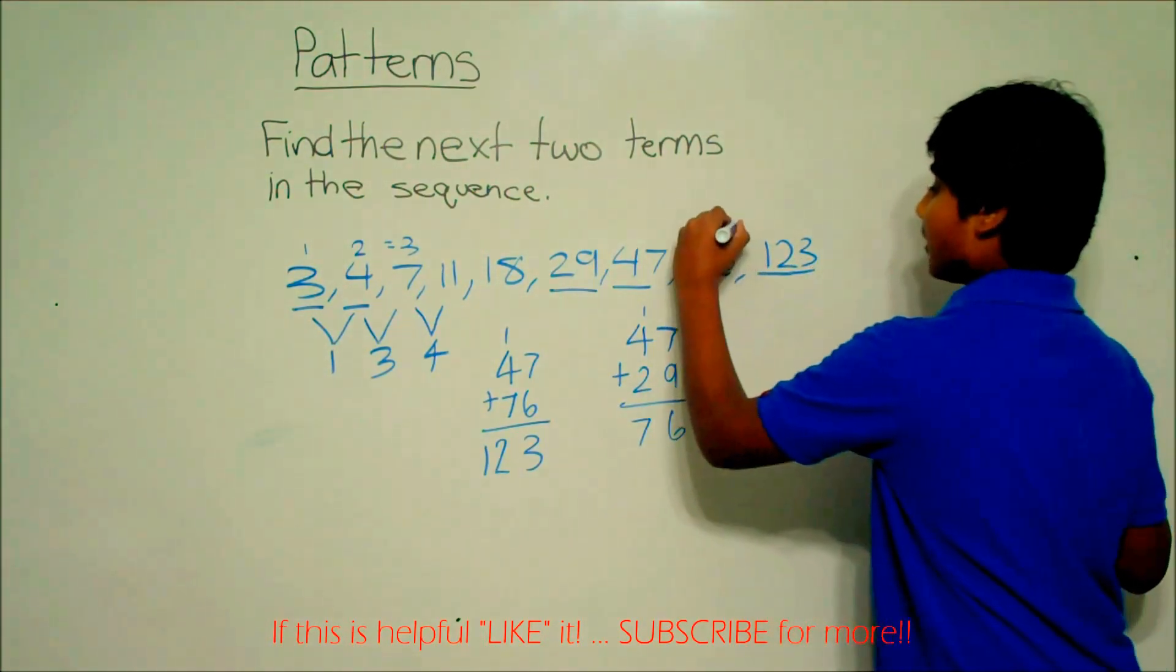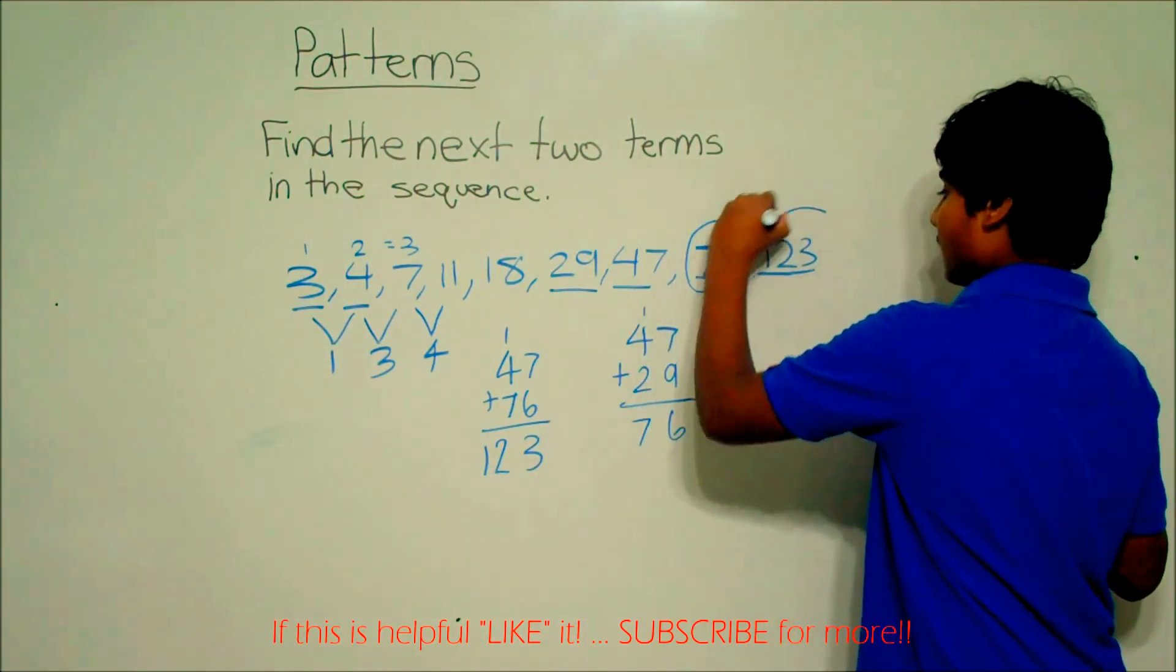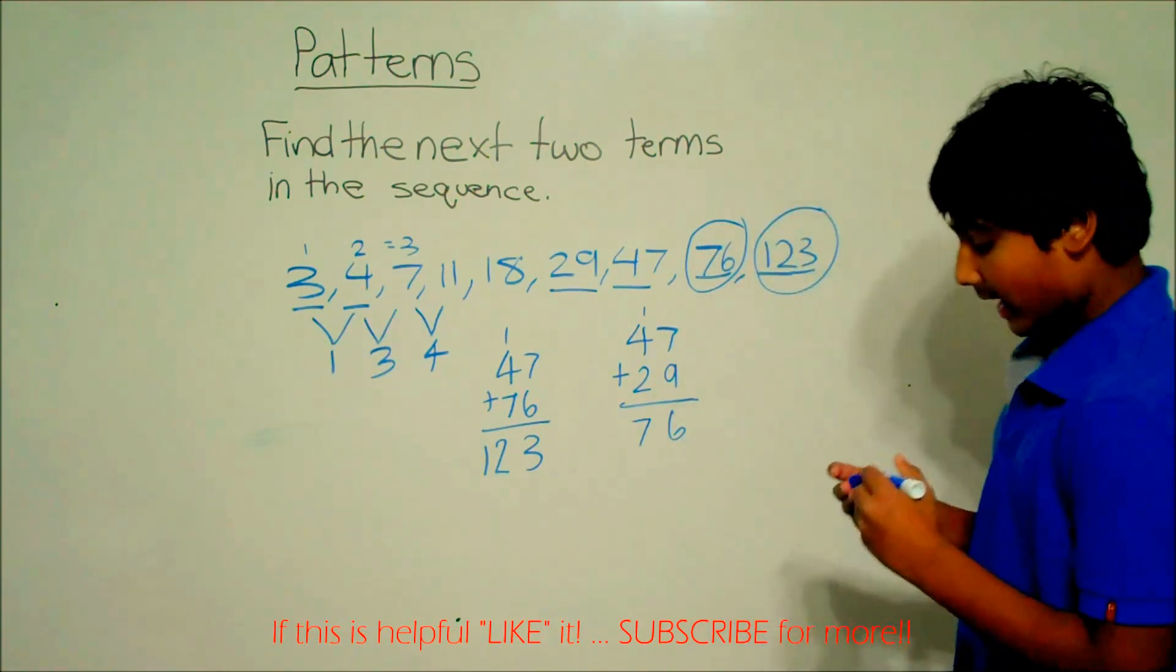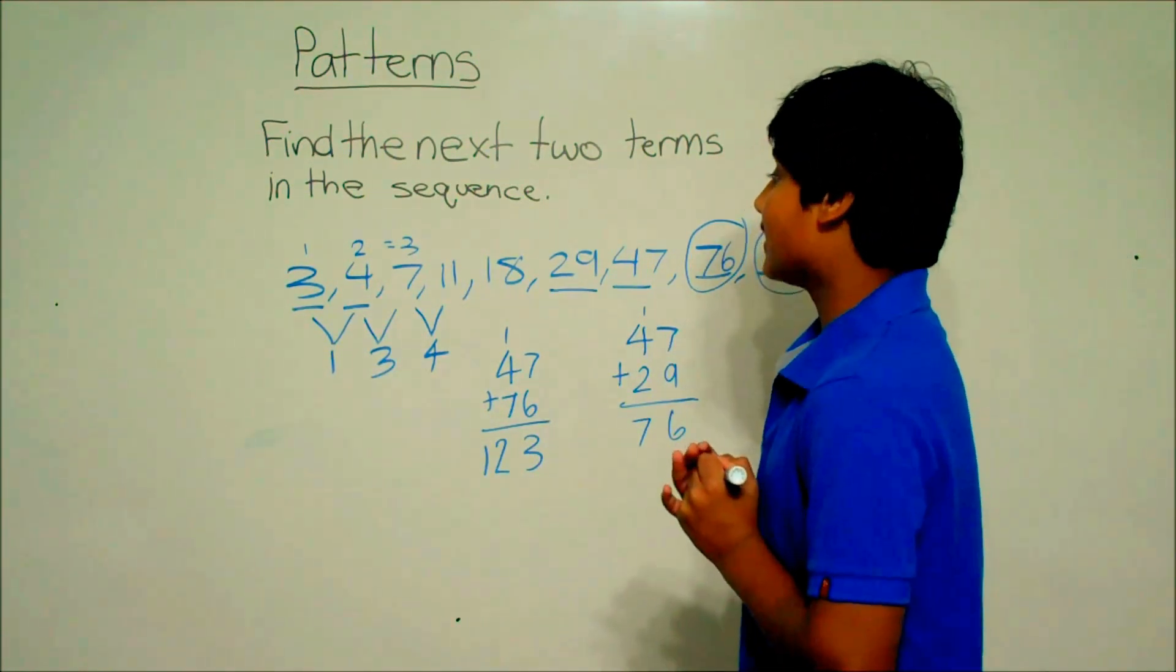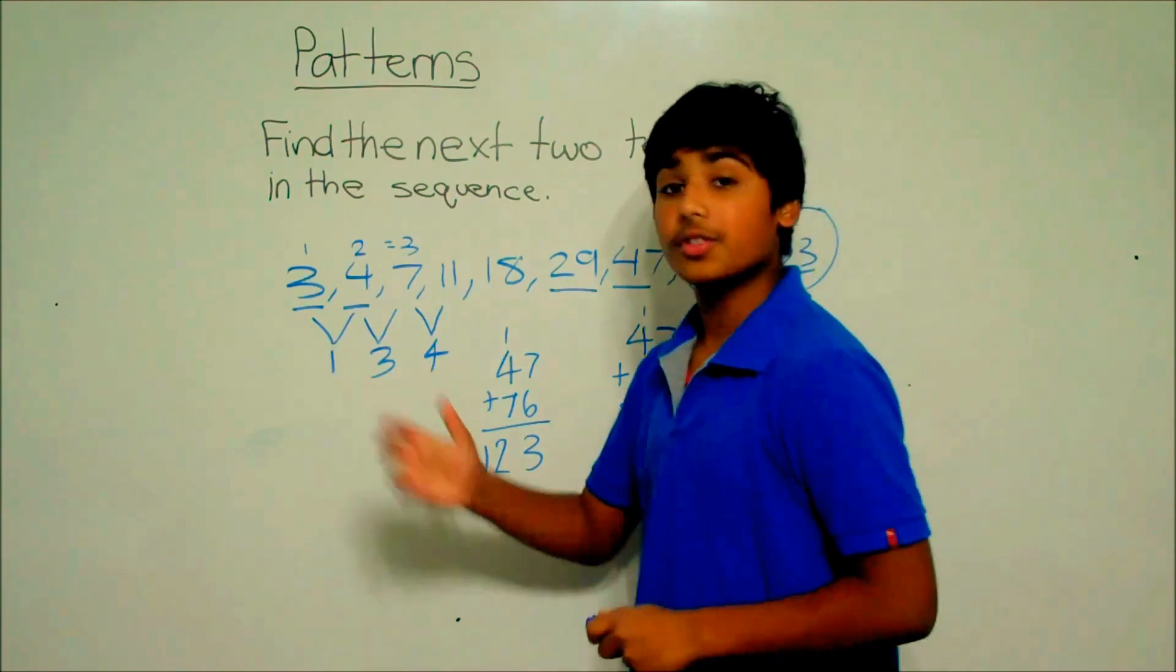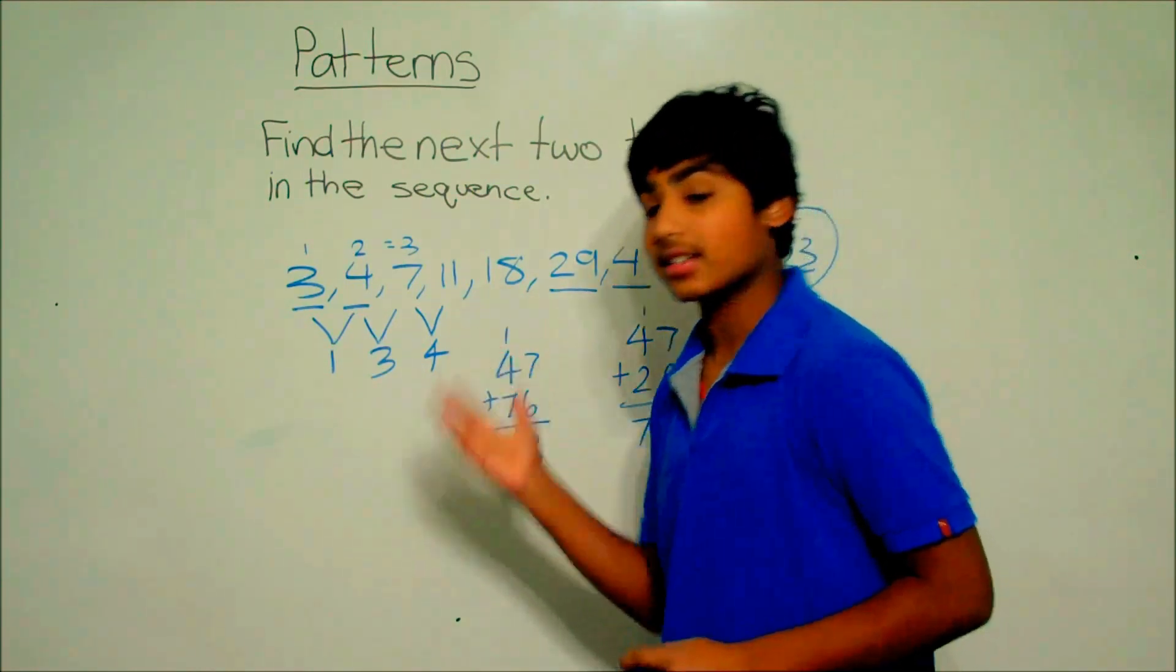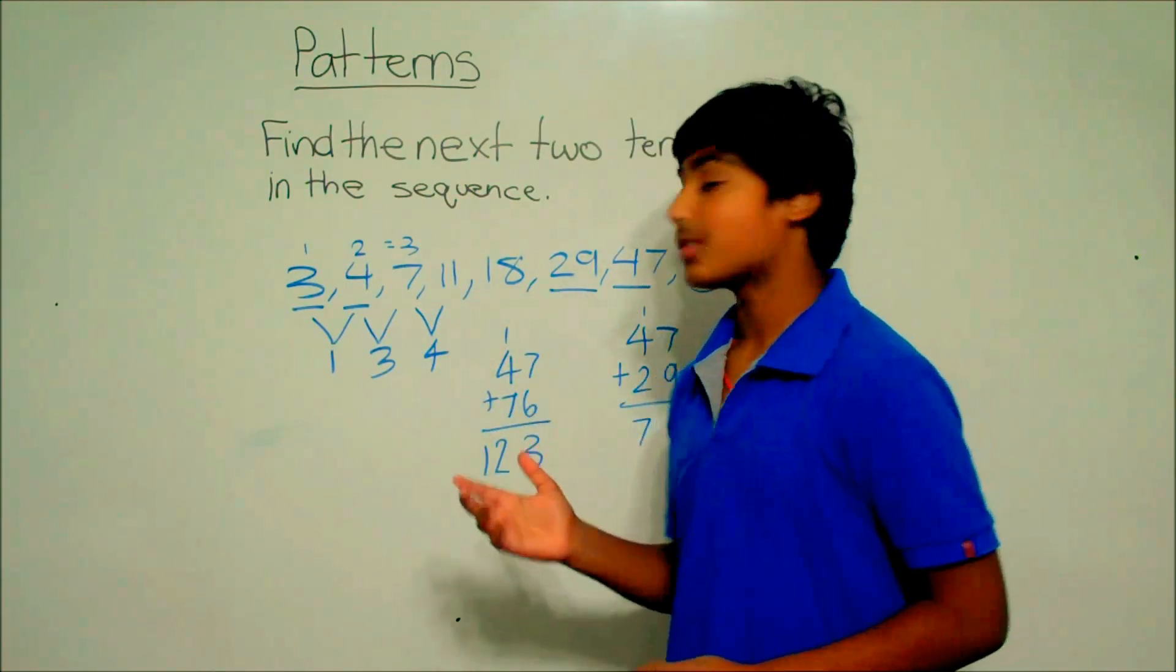So the last two terms of the sequence are 76 and 123. We got that by adding the two previous terms to make the next term. And that is how you solve this pattern.